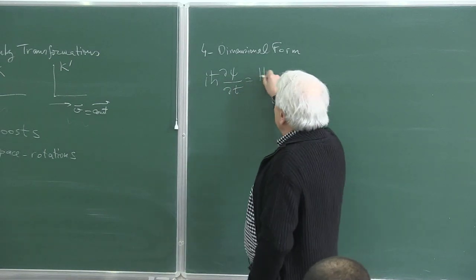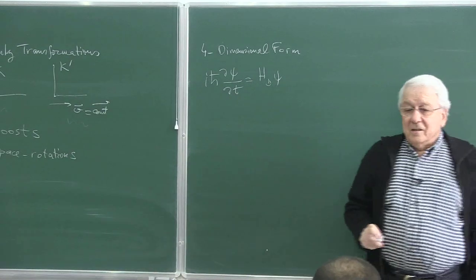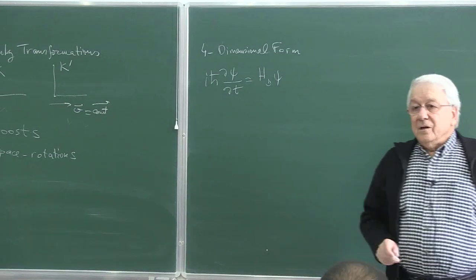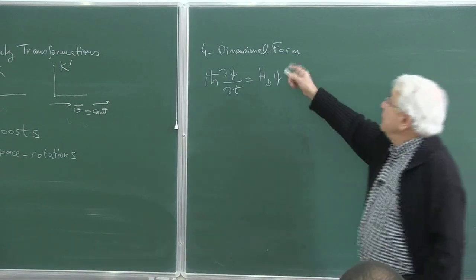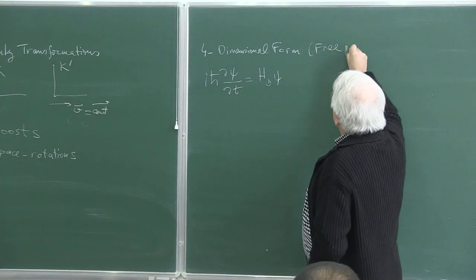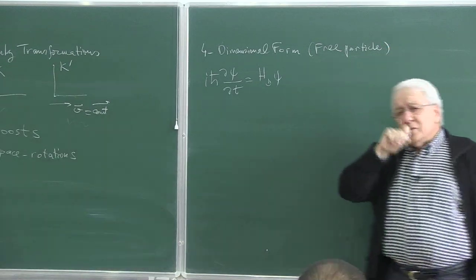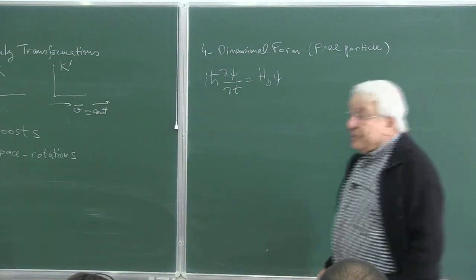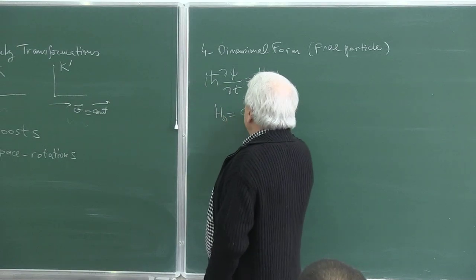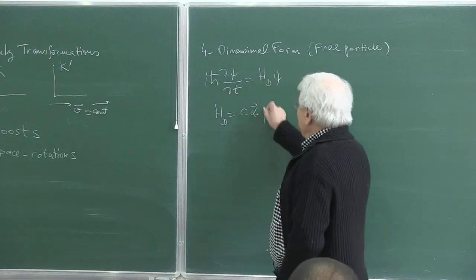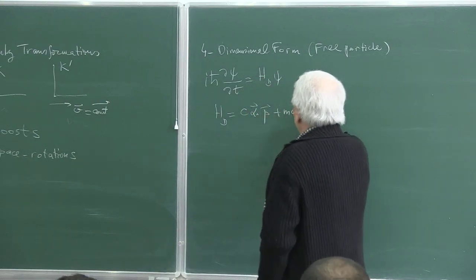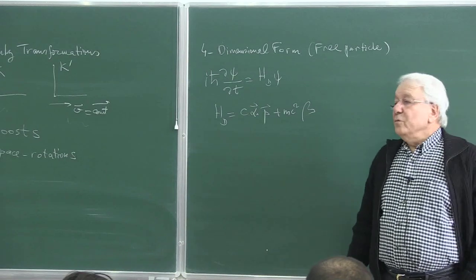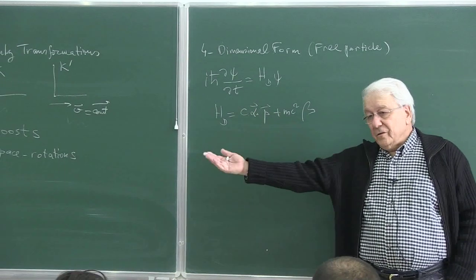For the free particle, the Hamiltonian in the Schrödinger theory is p squared over 2m; for the Dirac equation it is c alpha dot p plus mc squared beta. Once you specify the form of the Hamiltonian, you know which equation you are dealing with. The alpha is a Hermitian matrix, off-diagonal, and the 2x2 blocks are the conventional Pauli matrices — one likely representation of the algebra they satisfy.